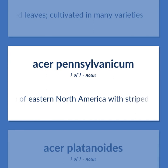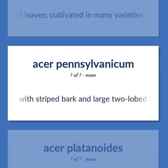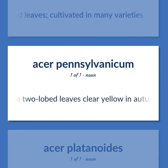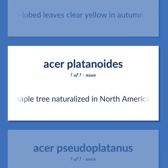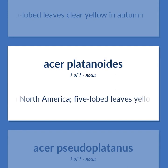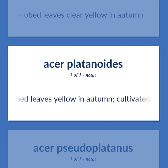Maple of eastern North America with striped bark and large two-lobed leaves clear yellow in autumn. A large Eurasian maple tree naturalized in North America, five-lobed leaves yellow in autumn, cultivated in many varieties.